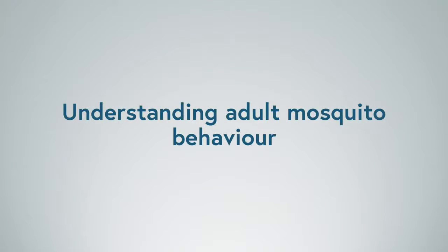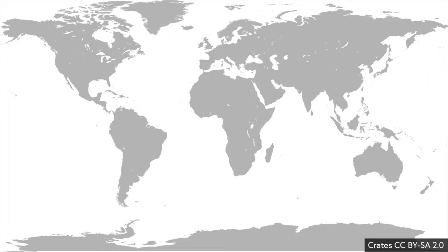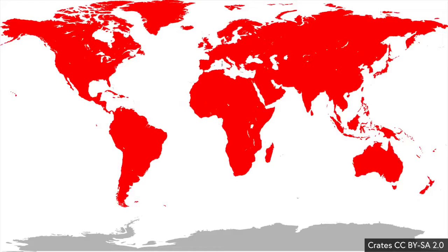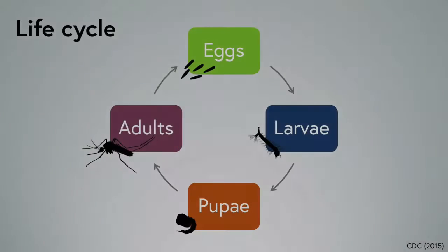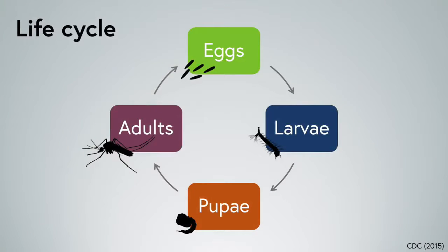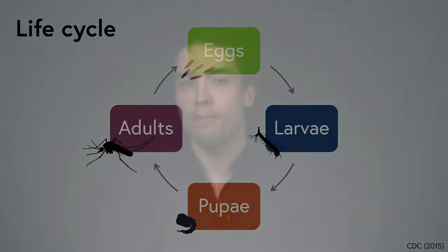The first step in designing a particular method of trapping a mosquito species is to understand the mosquito's behavior. There are over three and a half thousand species of mosquito worldwide, found on every continent except Antarctica. Whilst each of these species follow the same four-stage life cycle consisting of egg, larva, pupa and adult, there are many differences in the basic biology of each life stage between species which will influence how we are able to trap them. Here we are focusing on adult behavior in particular.